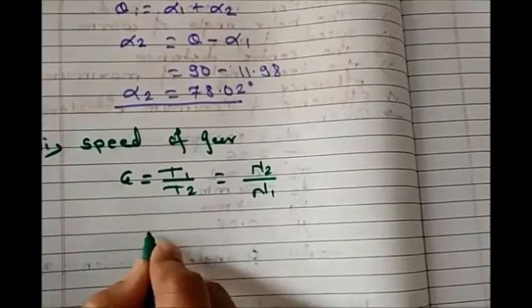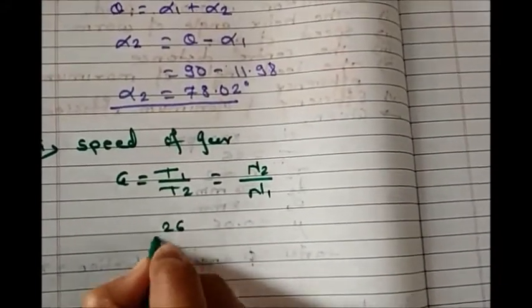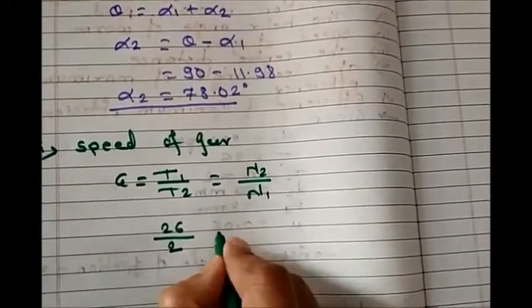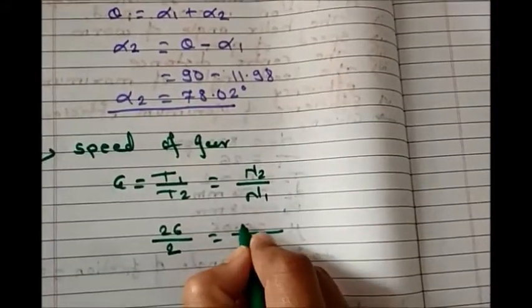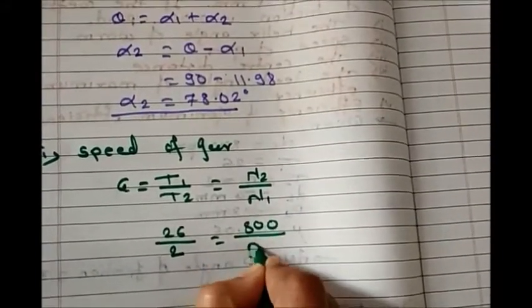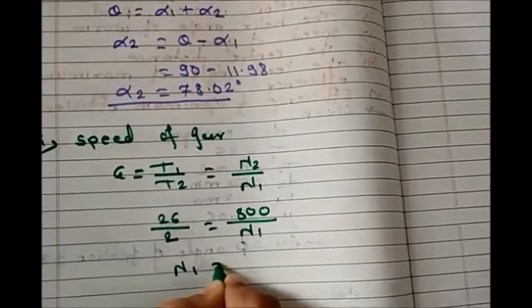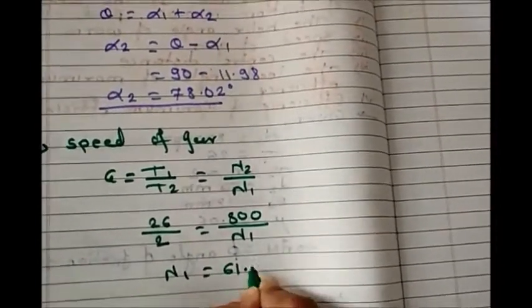So t1 is given, that is 26 divided by t2 equals 2, then speed of worm is given, that is 800 divided by n1. So we get n1 equals 61.53 rpm.